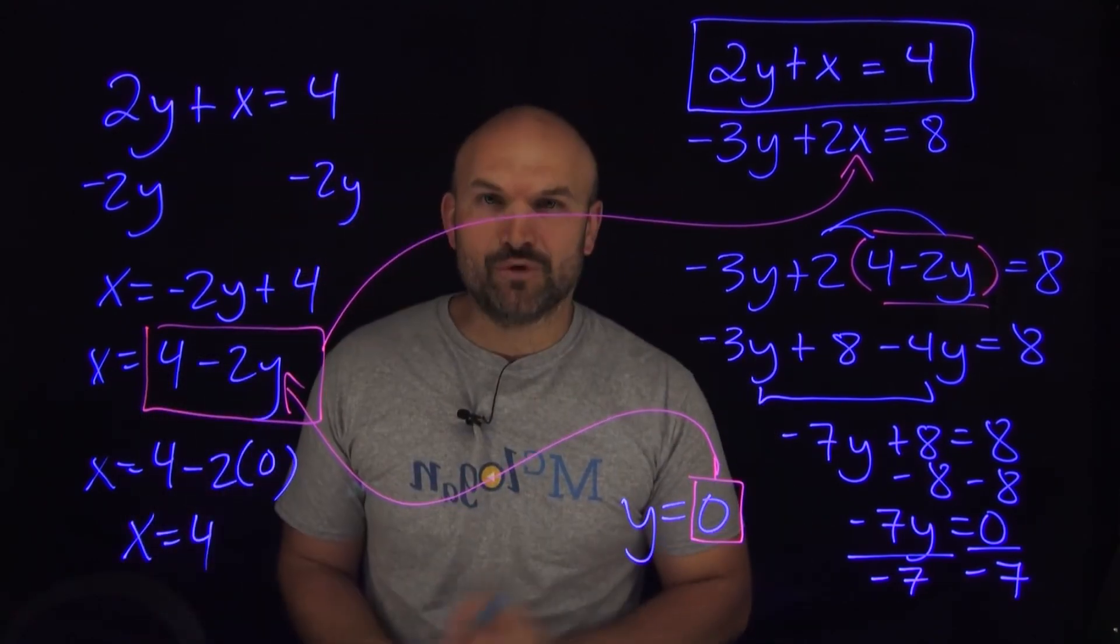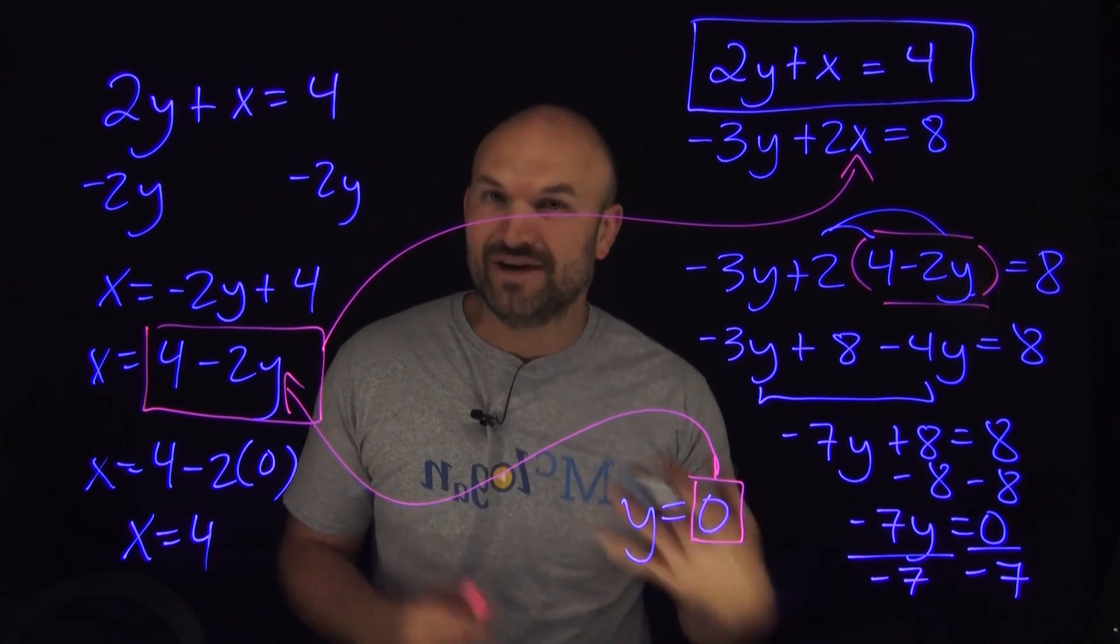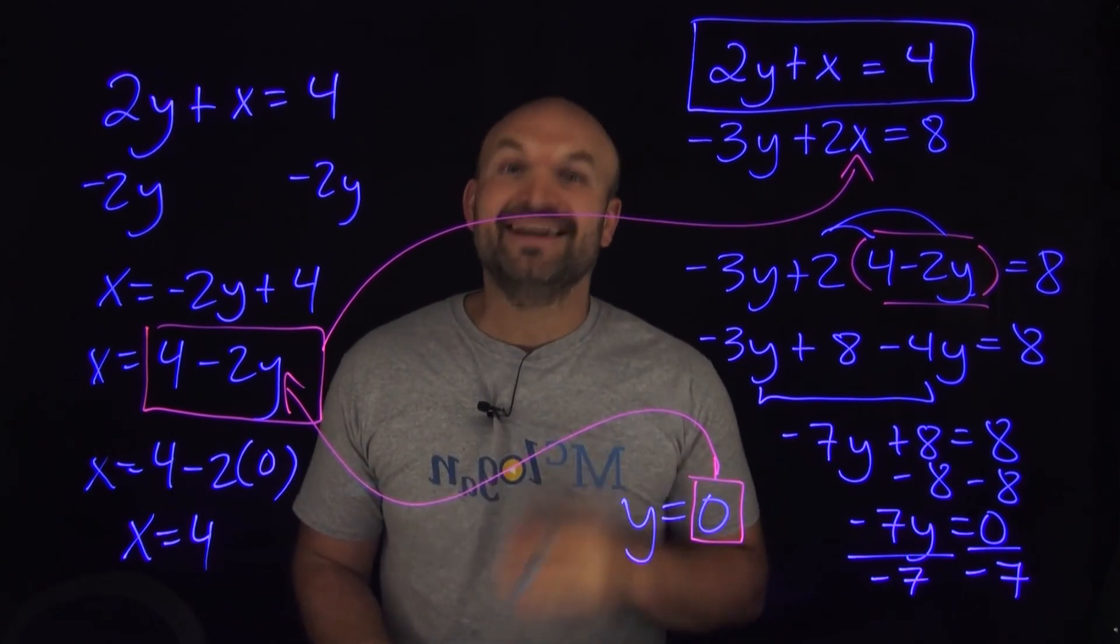So again, please always follow the rule when you have a variable with a coefficient of 1 or negative 1. Use substitution and thank me later.